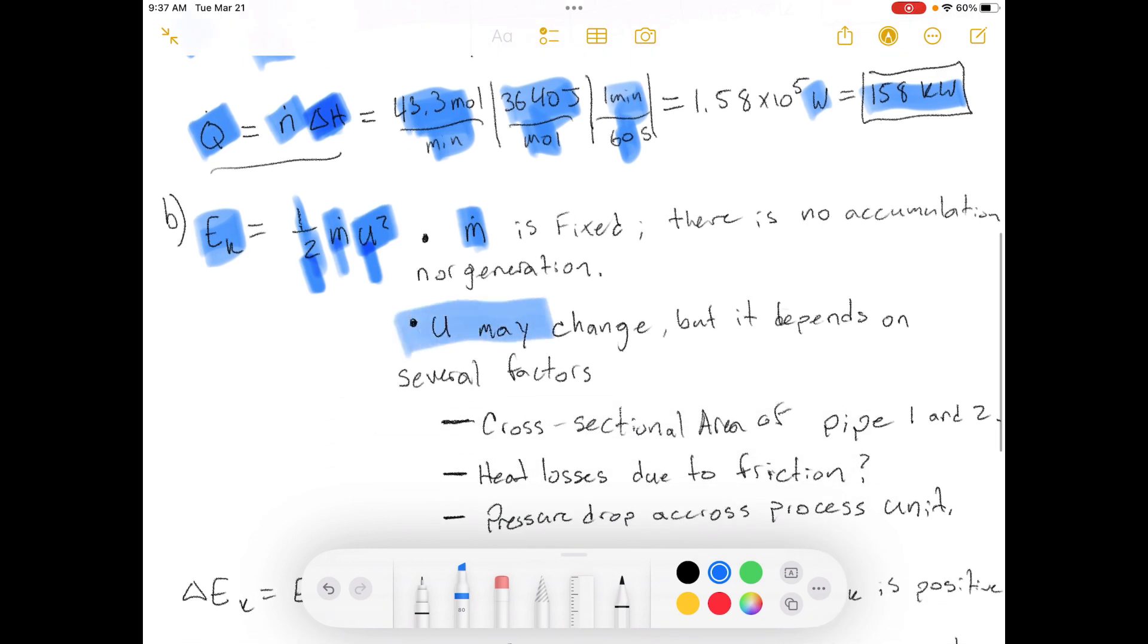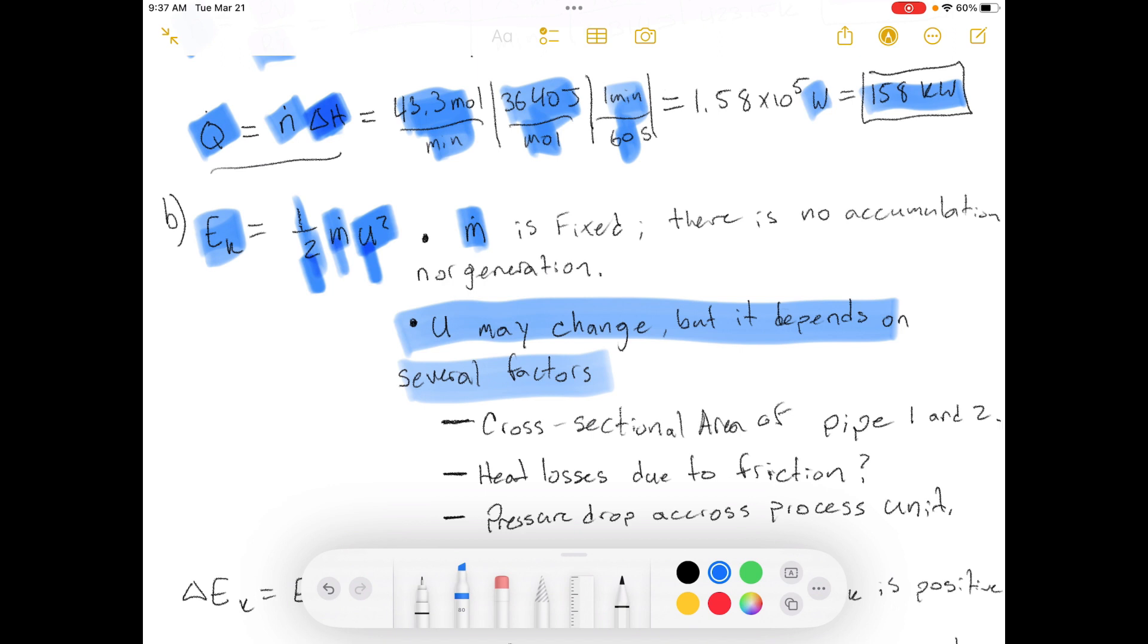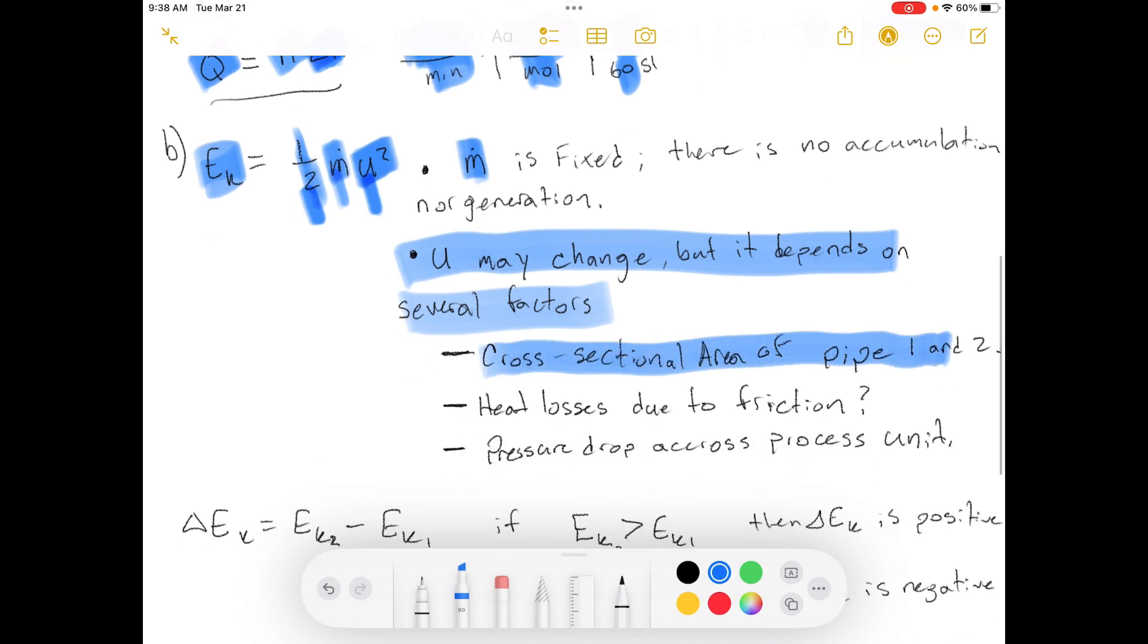So how could the stream velocity change? Well, it could change if the cross sectional area of the pipe changes from pipe one to pipe two. The other thing that could change the stream velocity is if there's losses in kinetic energy due to friction in the system, the gas flowing against the pipe walls and the gas rubbing against each other. If you have turbulent flow, then you're going to have losses due to friction, and your gas will heat up just by nature of flowing through the pipe. And that energy comes from the kinetic energy and turns into heat energy.